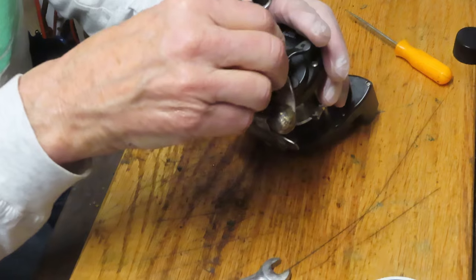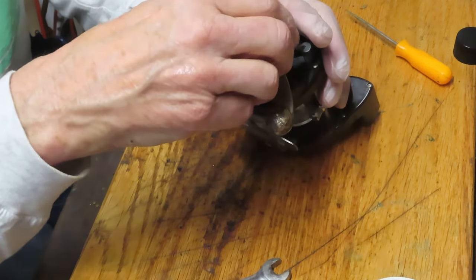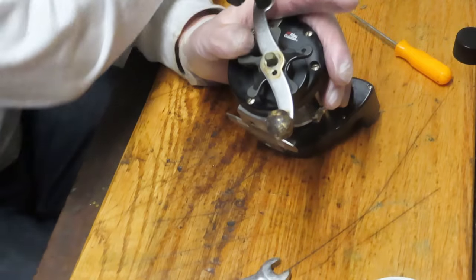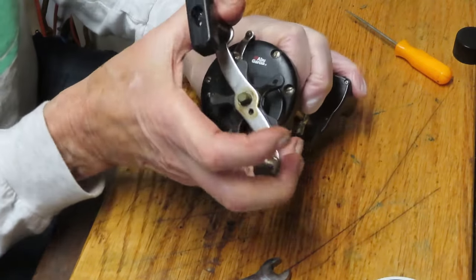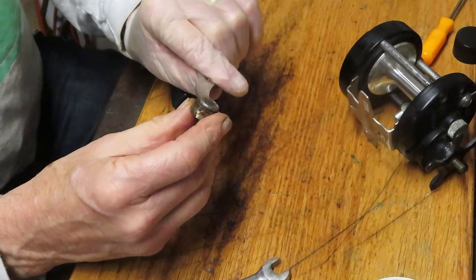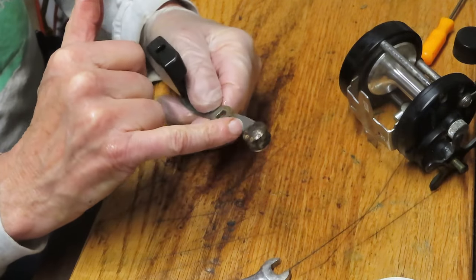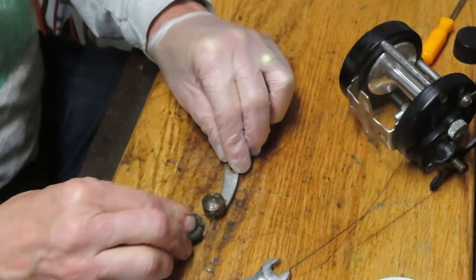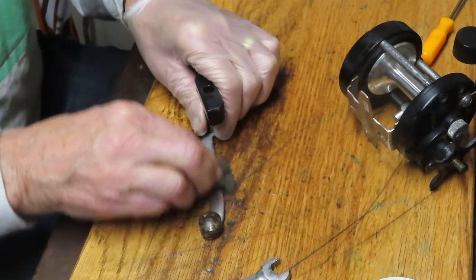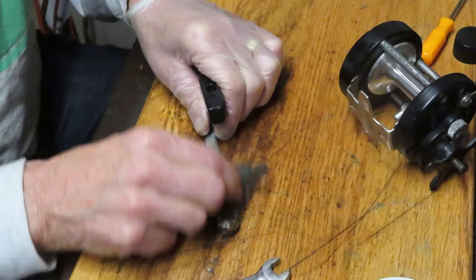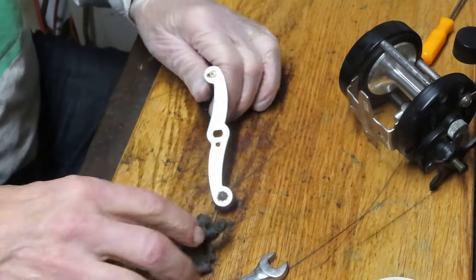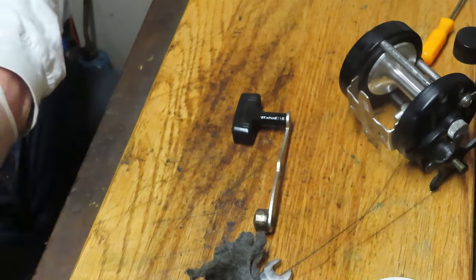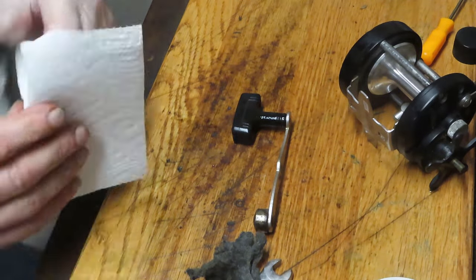I just used a 10 millimeter nut wrench to take the nut cap off, and then we can remove the handle. Sometimes handles say a lot. This one, the plating wasn't very good on it because the plating got knocked off and turned to rust. Not much you can do there. I'm going to use a light steel wool to get the rust off of the arm or the blade of the handle.